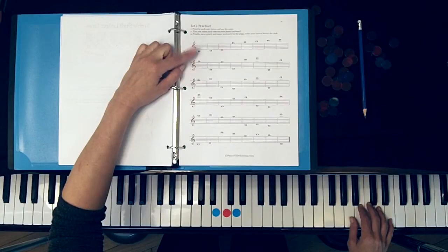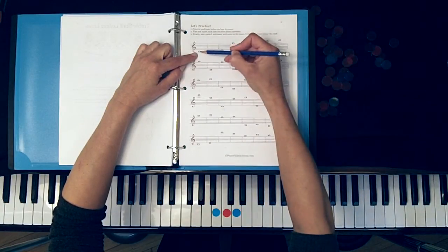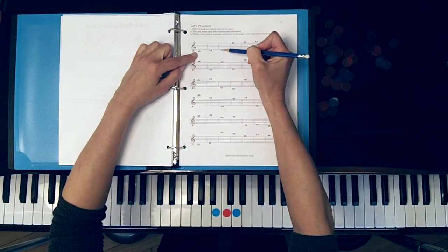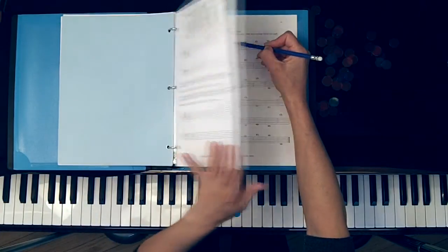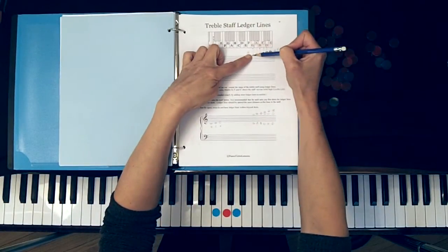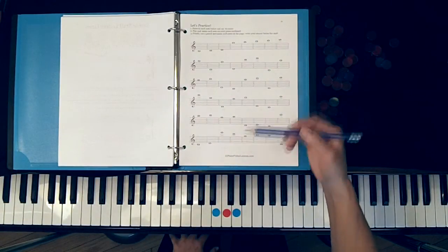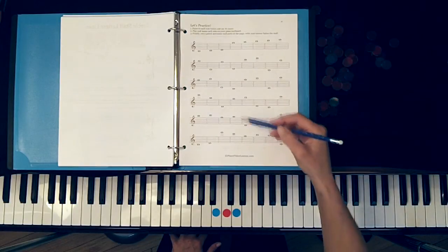What we're going to do is now point at these notes and say their names. Point: B, C, D, G. If you're not sure what the note is just flip back over, locate the note and the name, and continue.